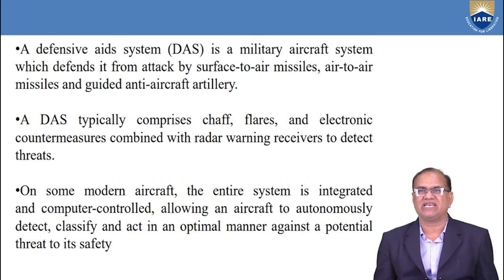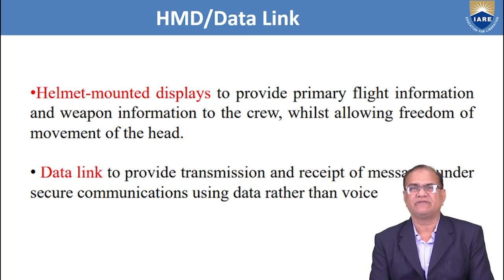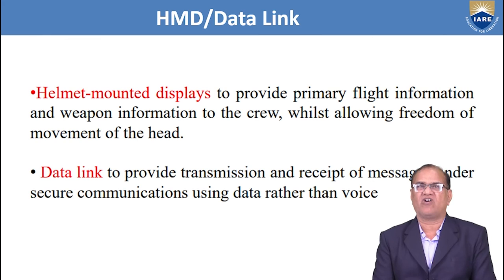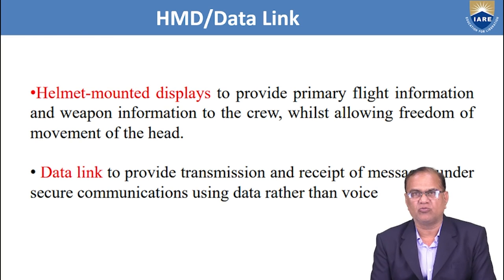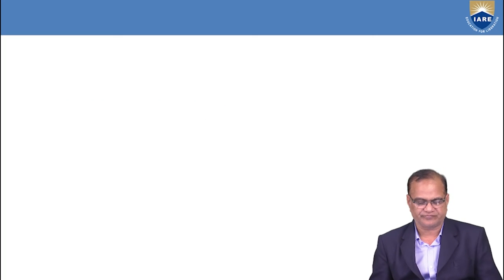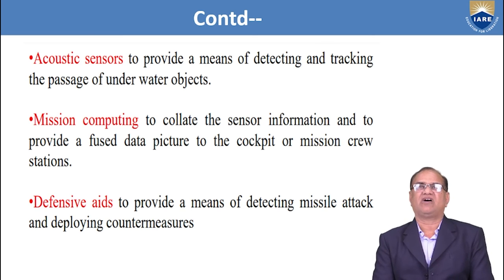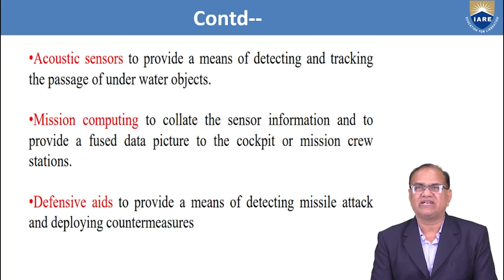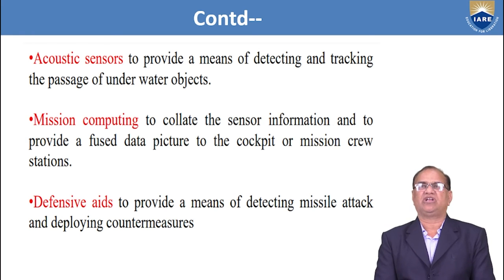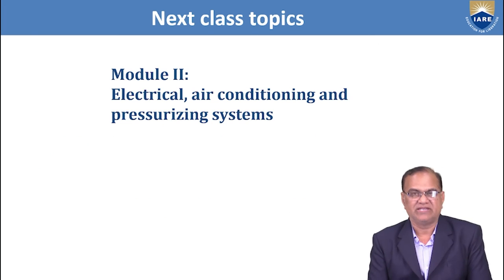Next is the Helmet Mounted Display (HMD) and data link. The HMD provides primary flight information and weapon information to the crew while allowing freedom of movement of the head. The data link provides transmission and receipt of messages under secure communication using data rather than voice. Acoustic sensors provide a means of detecting and tracking the passage of underwater objects. Mission computing collates the sensor information and provides a fused data picture to the cockpit or mission crew station. Defensive aids provide a means of detecting missile attack and deploying countermeasures.